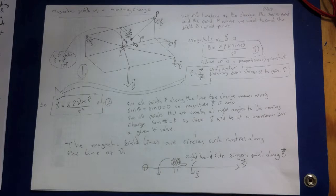First, experiments show that the magnitude of the magnetic field B is again proportional to Q and to the inverse square. But the direction of the magnetic field B is not along the line from the source point to the field point.